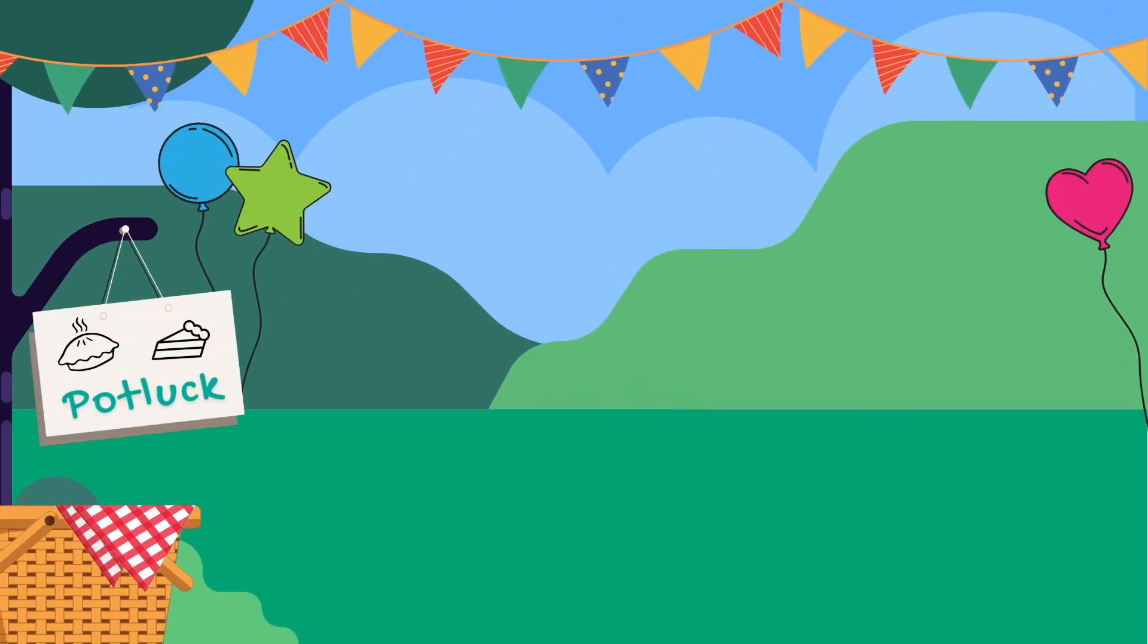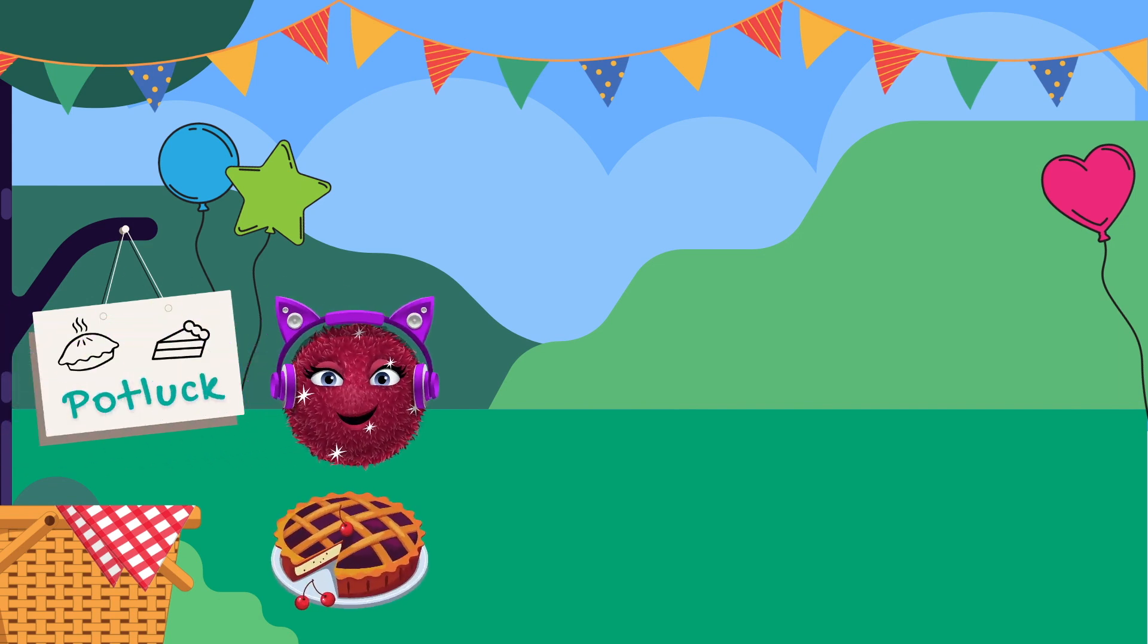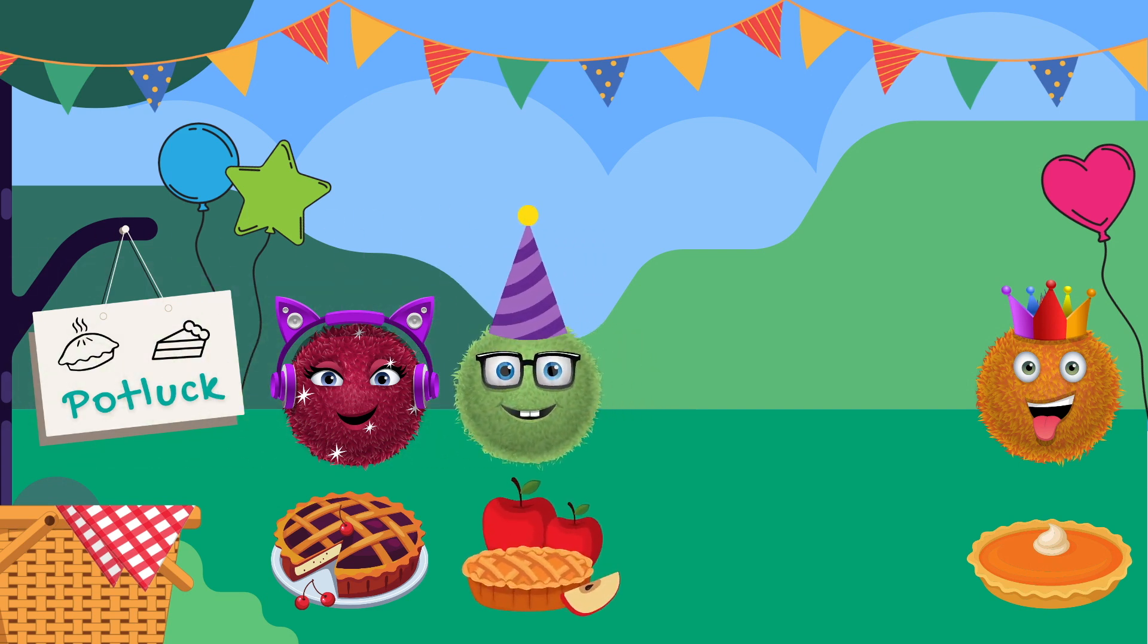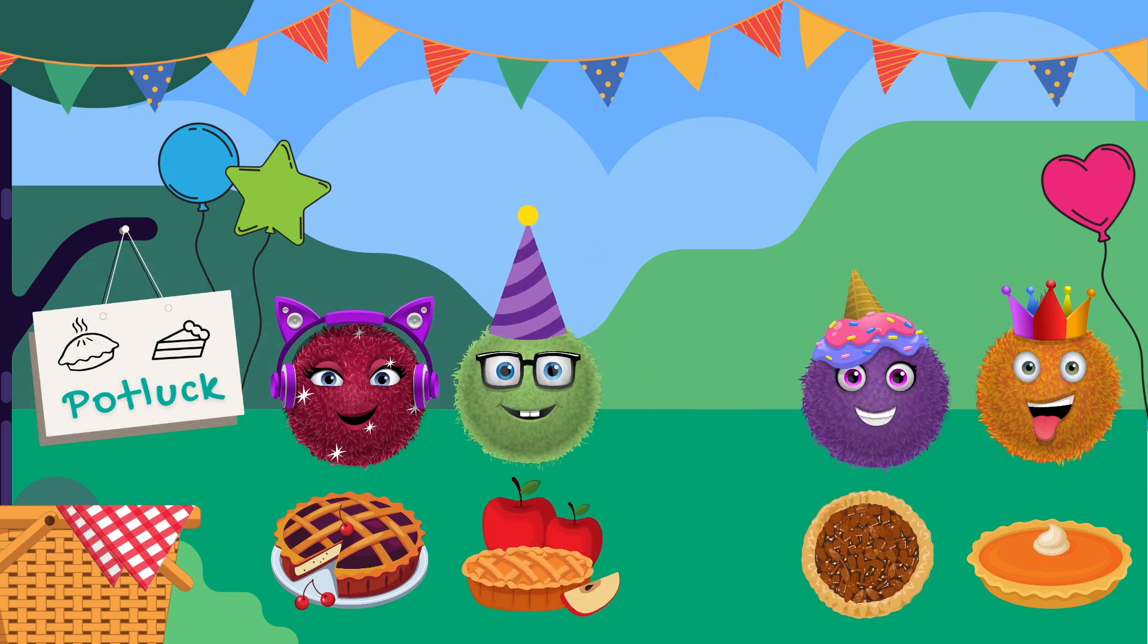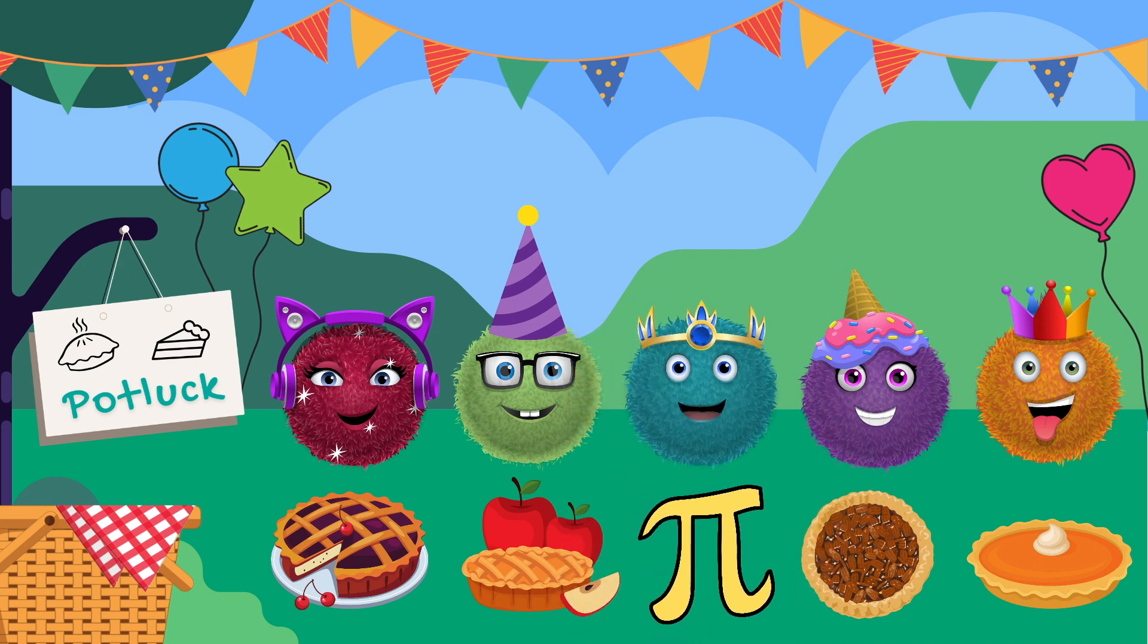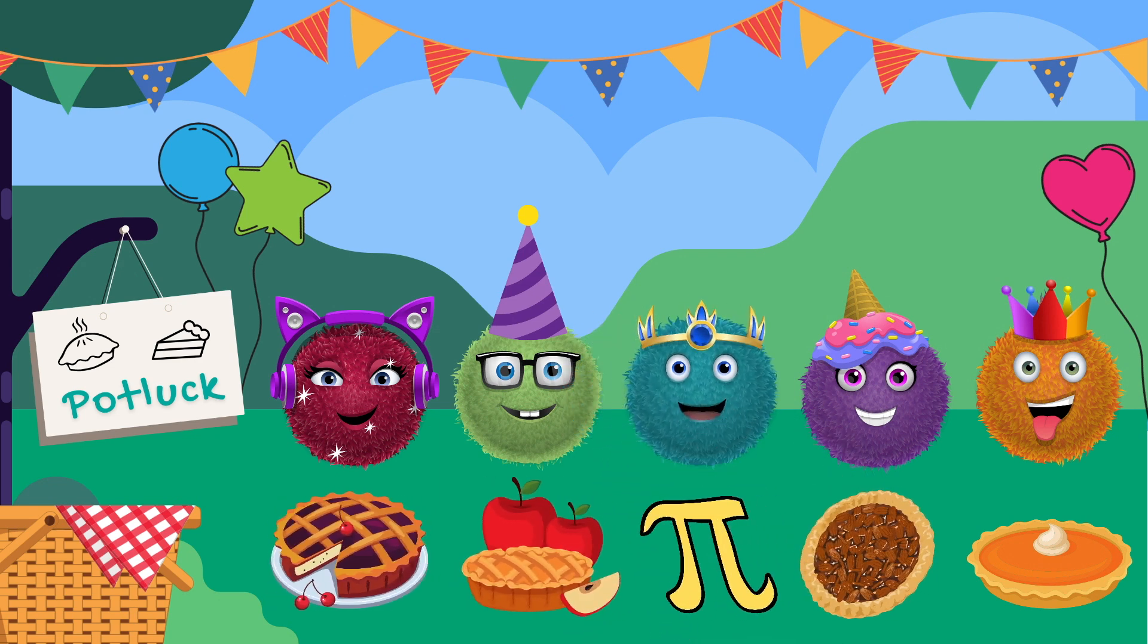Welcome to the Fuzz Family's Pi Day Potluck. All the Fuzzes were supposed to bring a different kind of pie to share. Ruby has cherry, Spike brought pumpkin, Simon has apple, Violet brought pecan, and wait a minute, one of these pies is not like the others.